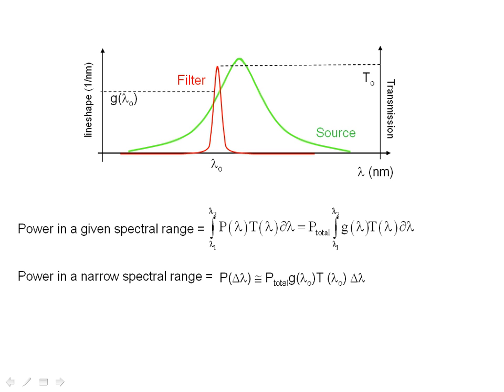We know the power in the given spectral range from the discussion we had earlier on the source is simply an integral of the power as a function of wavelength over the wavelength range, and all we have to do to calculate the amount of power that gets through a filter is throw the transmission function as a function of wavelength into that equation.